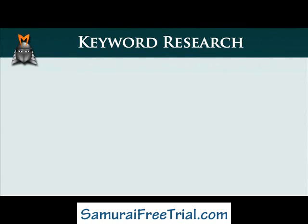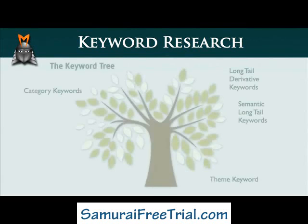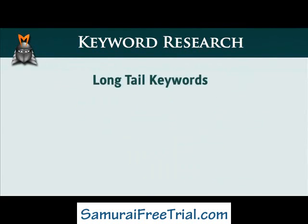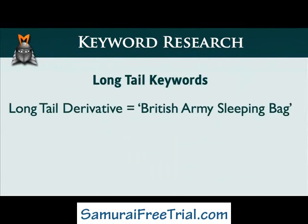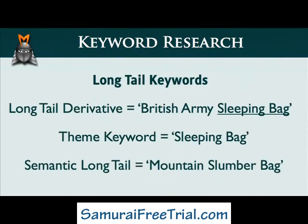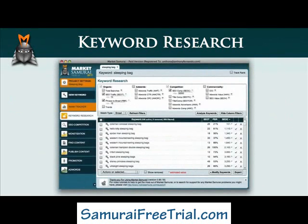So just to recap, in this video we looked at the keyword tree, which is a great way to visualize the structure of an effective website. We explored long-tail keywords and found that there are two main types: long-tail derivative keywords, which contain our root phrase, and semantic long-tail keywords, which do not contain our root phrase. And finally, we saw how to find long-tail keywords using Market Samurai by including Google Search keywords as a keyword source and lowering our SEO traffic filter to 10.